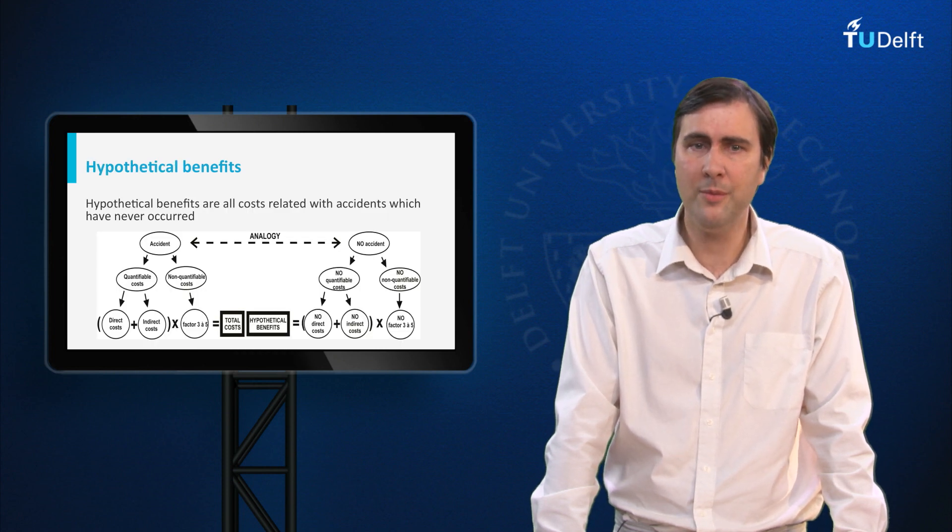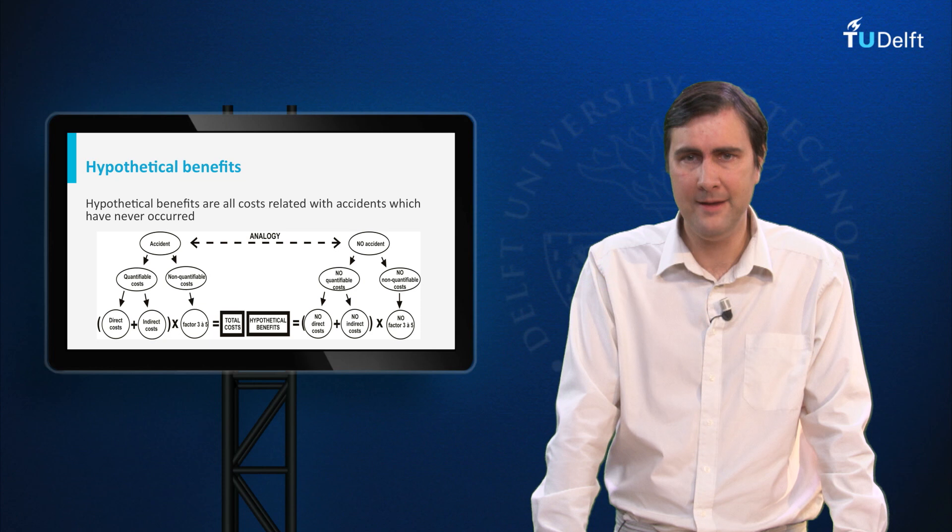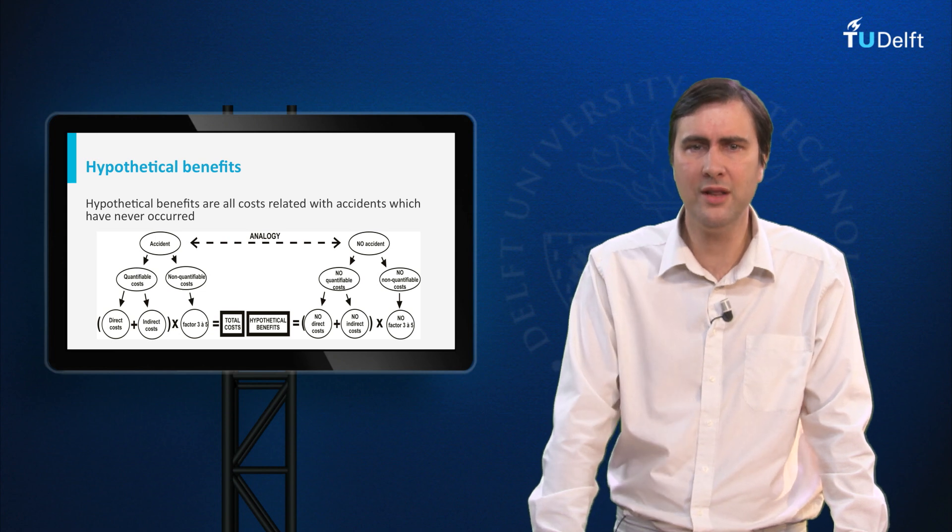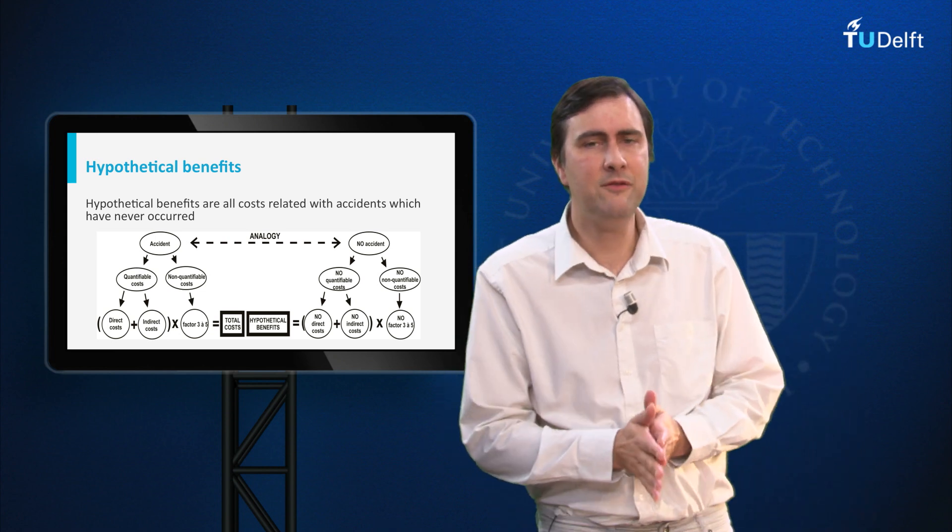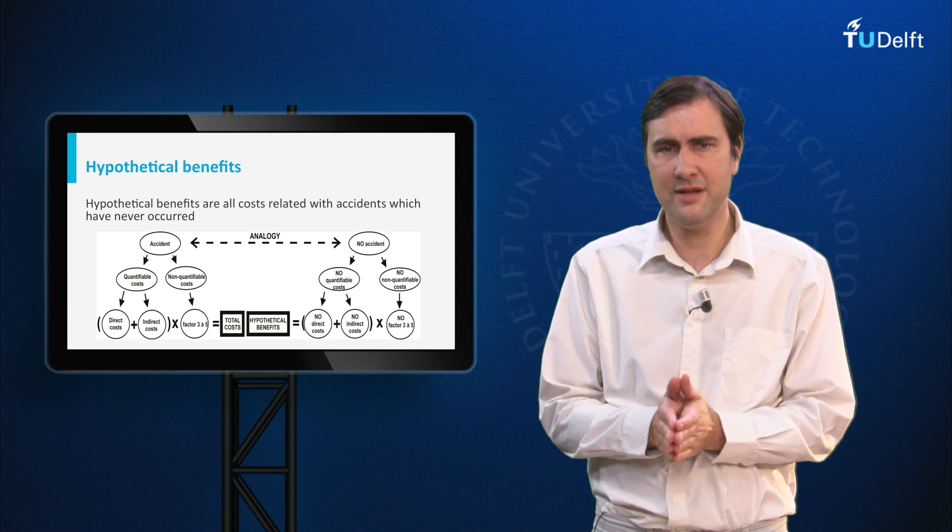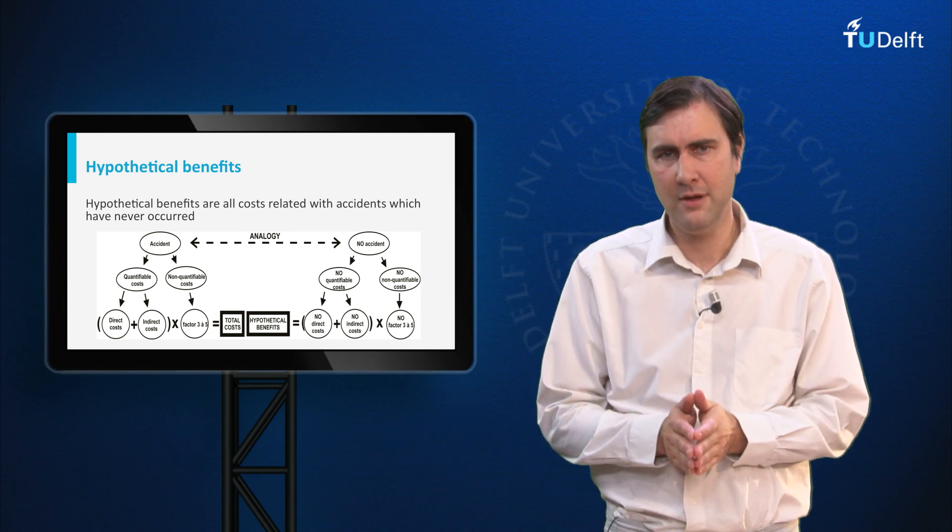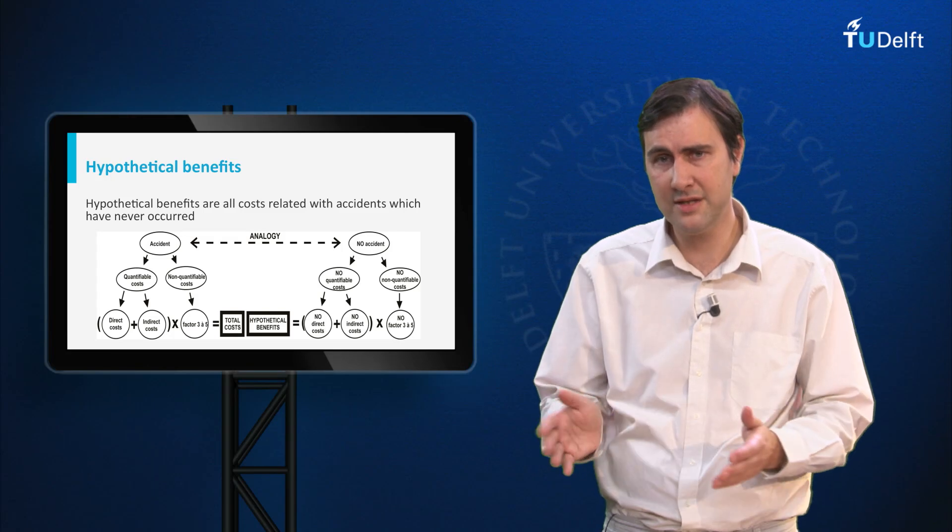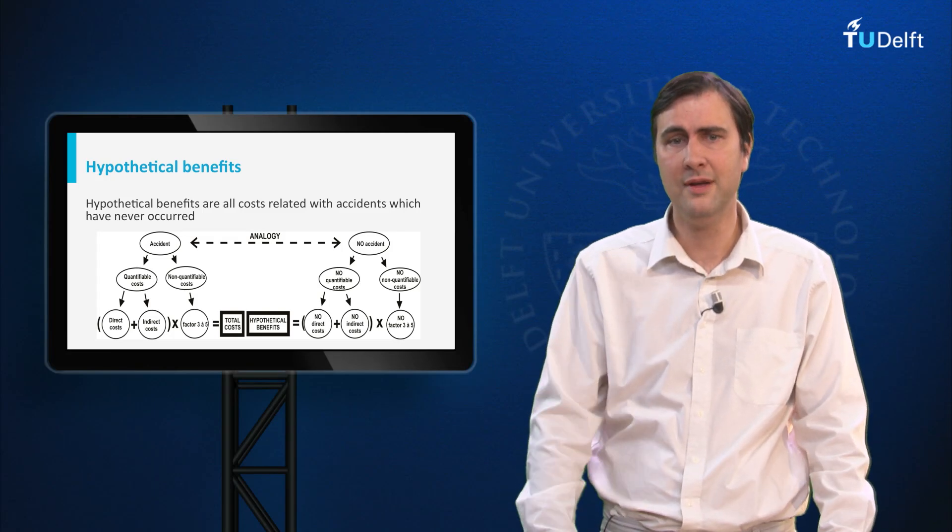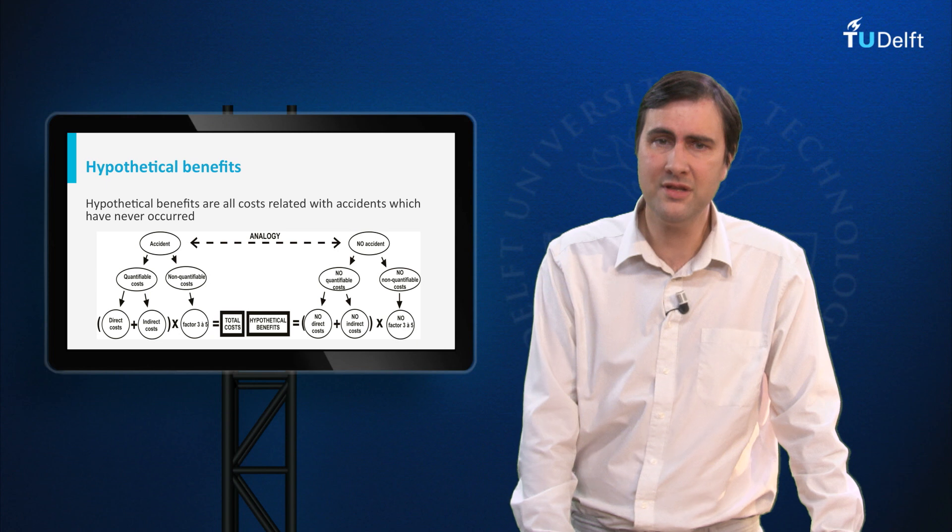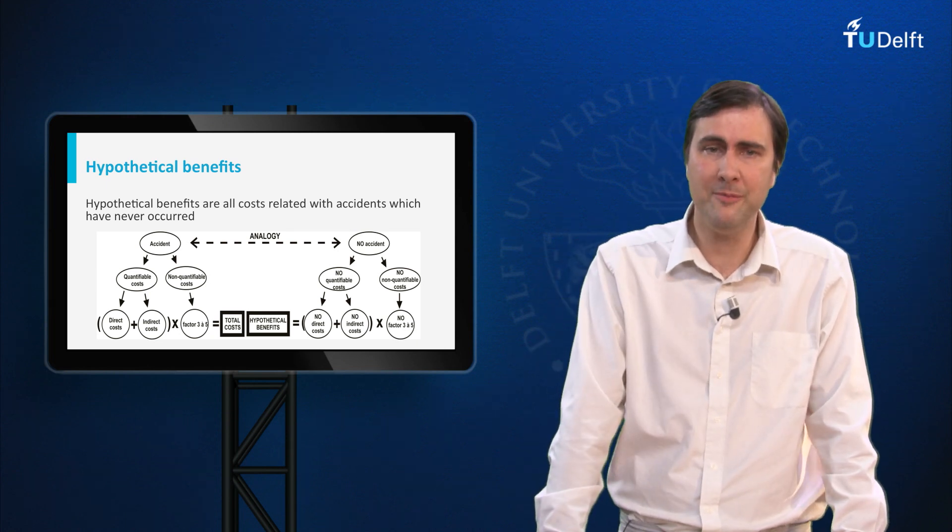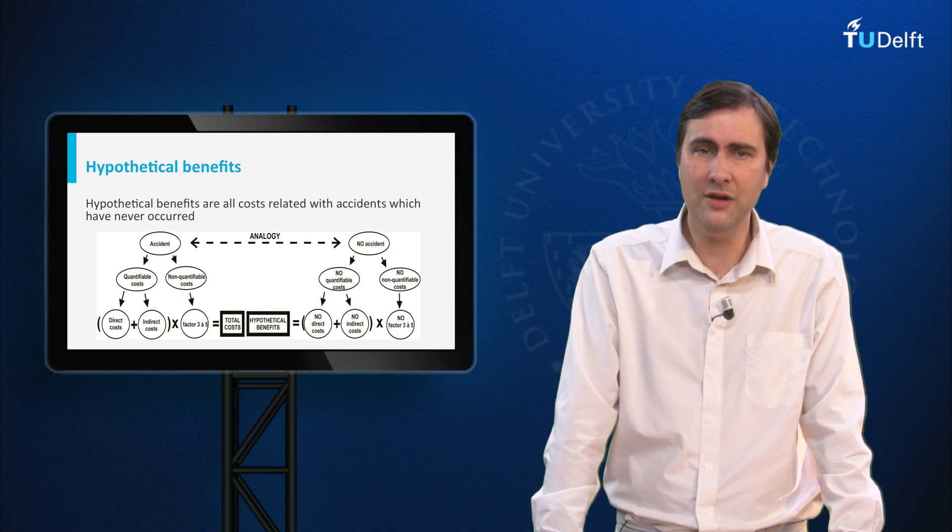Fifth are the hypothetical benefits. There are different categories of benefits linked to a safety investment. But how can we interpret the benefits? Well, the purpose of safety investments is to reduce present and future accidents. Thus the benefits are hypothetical, since the accidents or rather accident scenarios never occurred, and they are defined by the difference in consequences without and with a safety investment and if applicable, taking into account the difference in likelihood.